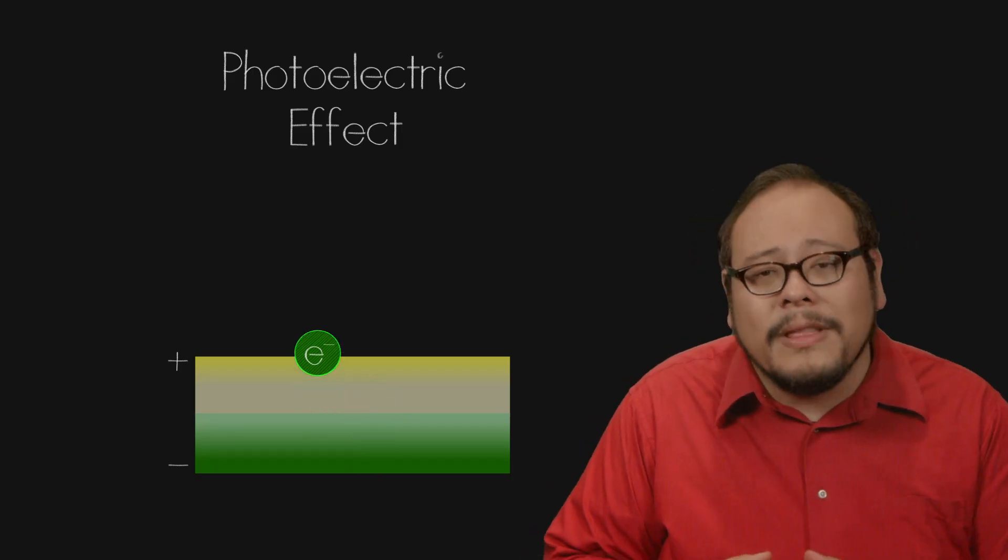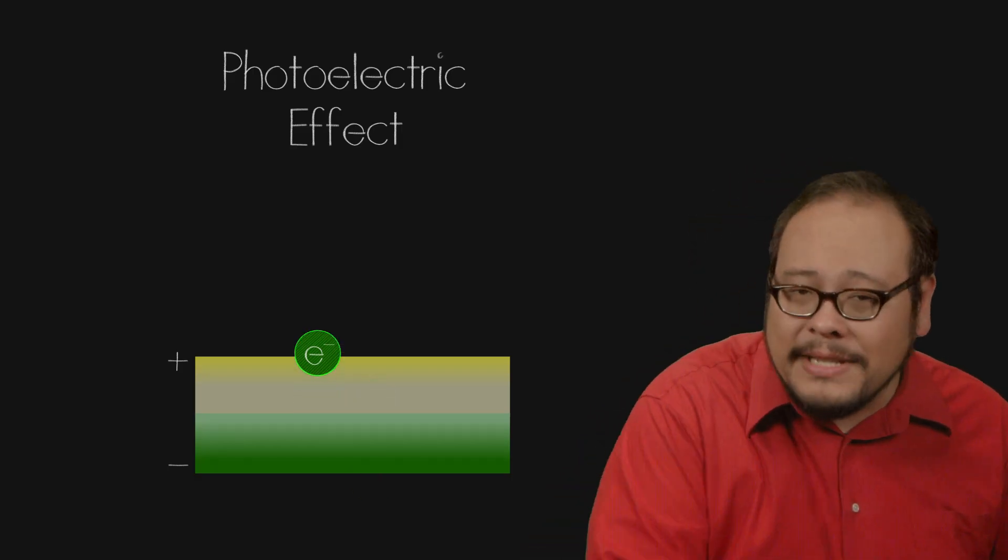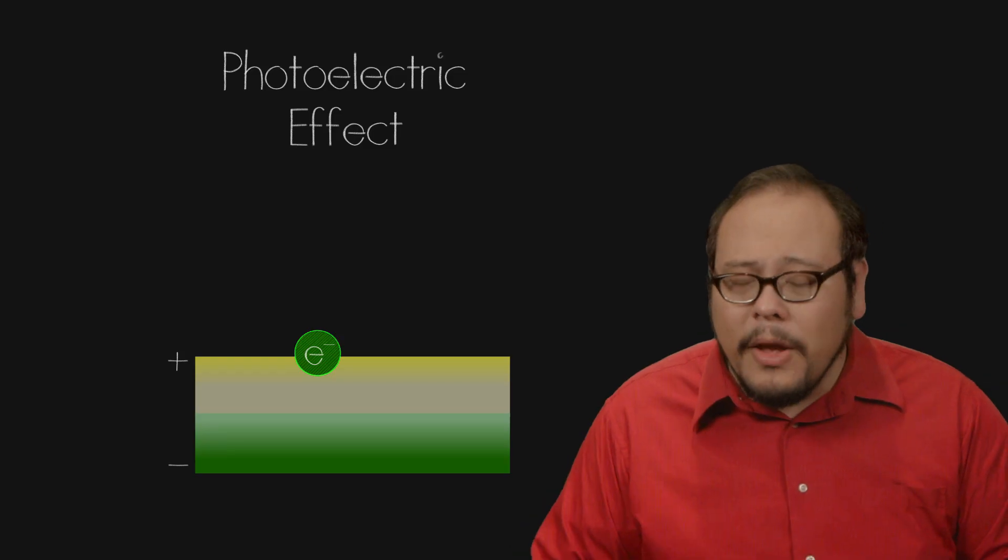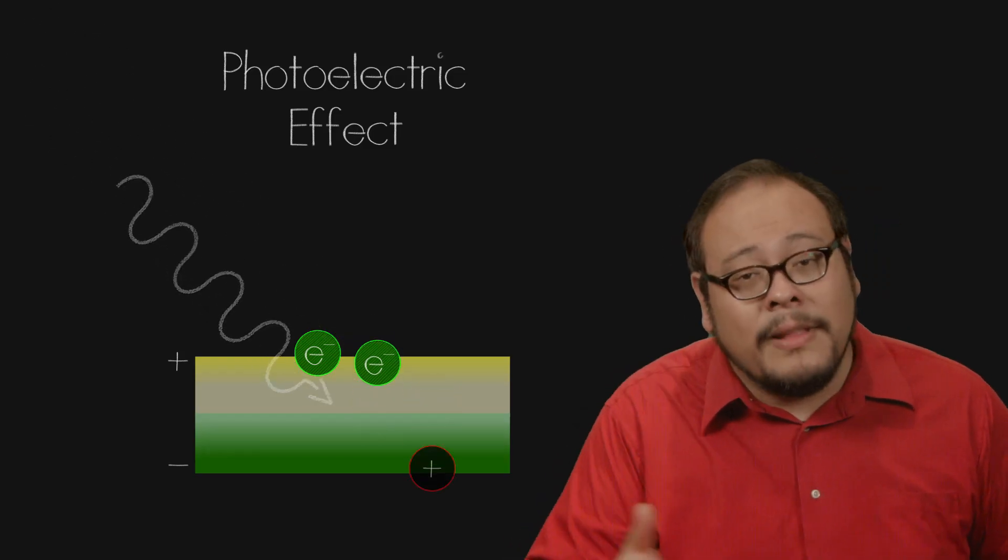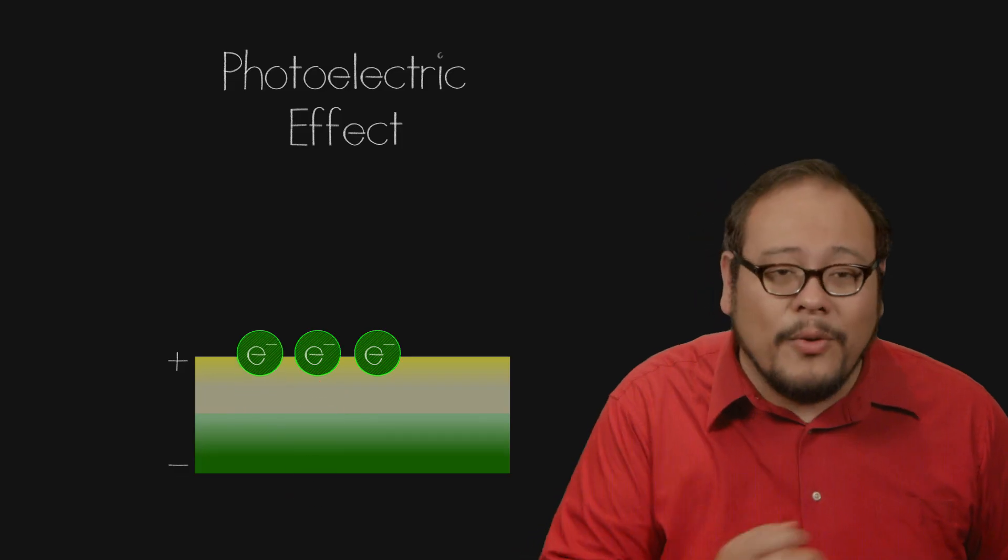The electron will move toward the positively charged N-type side of the diode. From here, we can measure the intensity of the light by measuring the number of electrons, or the voltage.